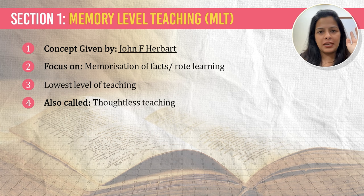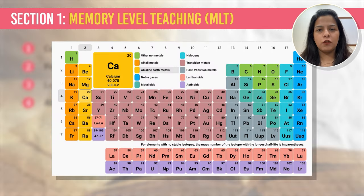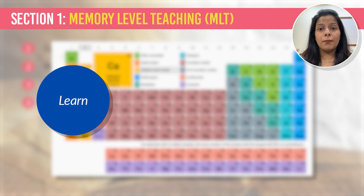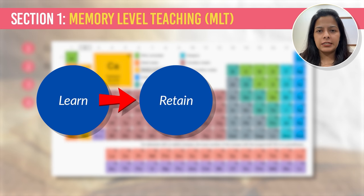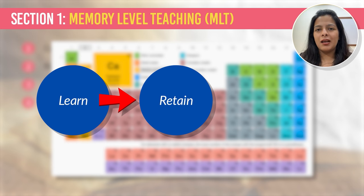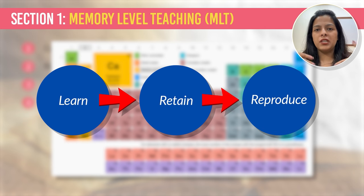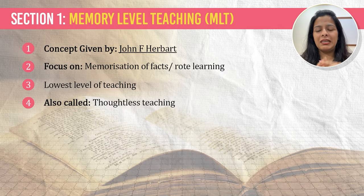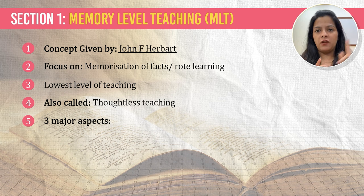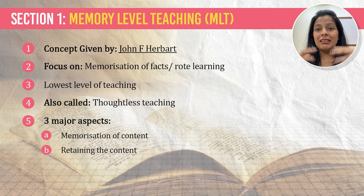Imagine I give you an assignment to memorize the entire periodic table for your viva. What you will do is first learn the periodic table, then make sure you've retained it well by verbally speaking it out or writing it down again and again. Then on the day of the viva, when asked, you reproduce the material exactly as it is. From this example, we know there are three aspects of memory level: memorizing the material, retaining the material, and reproducing the material.